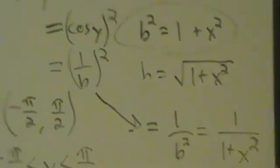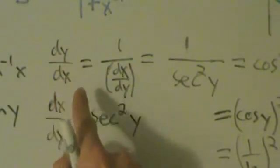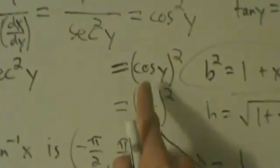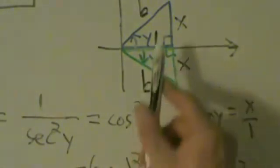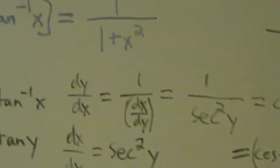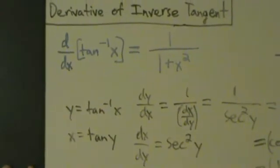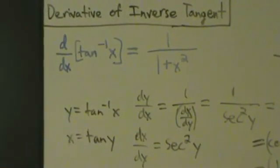And remember, this came all the way from: dy/dx equals 1 over dx/dy equals 1 over secant squared of y equals cosine squared of y equals cosine of y quantity squared. From our triangles, cosine of y is 1 over b, so 1 over b squared equals 1 over 1 plus x squared. That's the proof of the derivative formula for the inverse tangent function. There are some subtle technical details, but otherwise it's pretty straightforward — just a matter of remembering some trig.